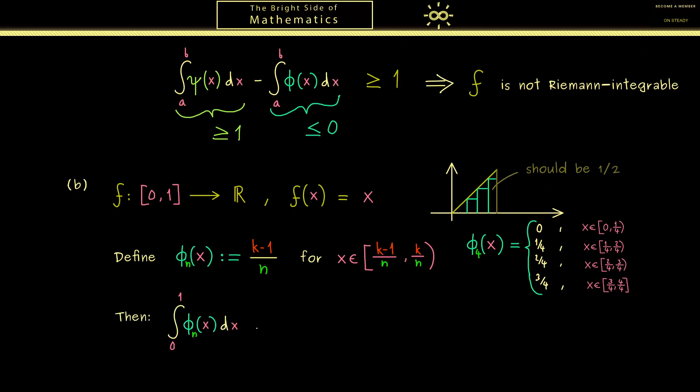Now as we have learned before the integral of a step function is always the sum of the areas of the rectangles. Please recall we have n steps therefore we have n rectangles. Honestly the first one has area 0 so we could ignore it but we can include it nevertheless. So now the area of one rectangle is simply the height times the width. And by construction this is for all our rectangles 1 over n.